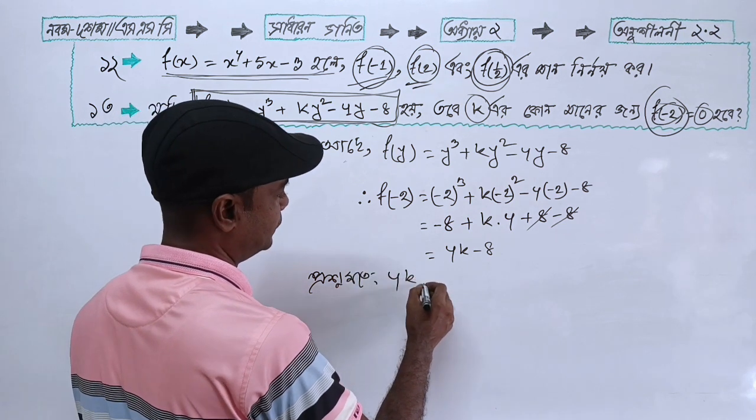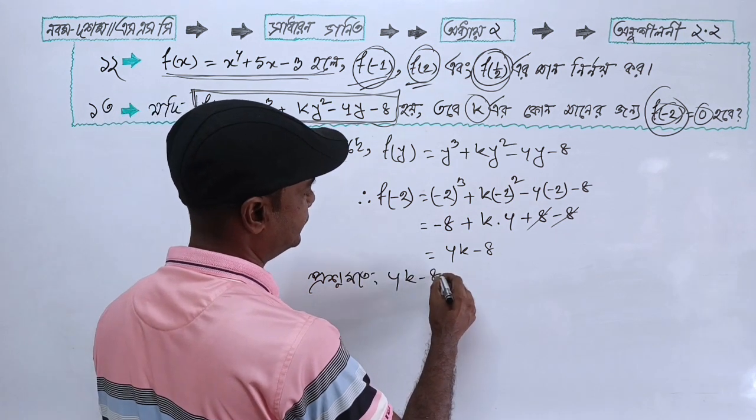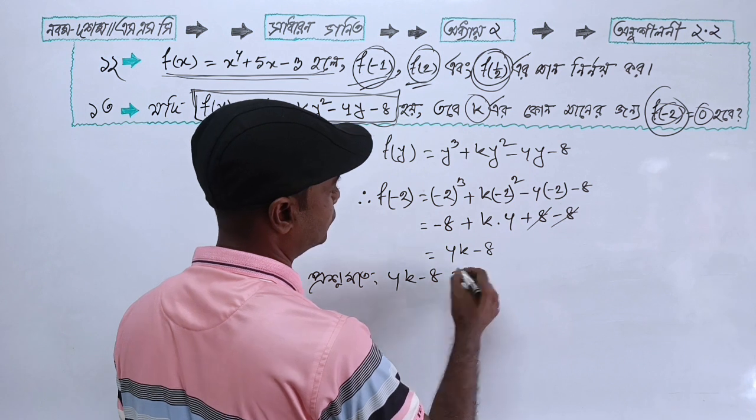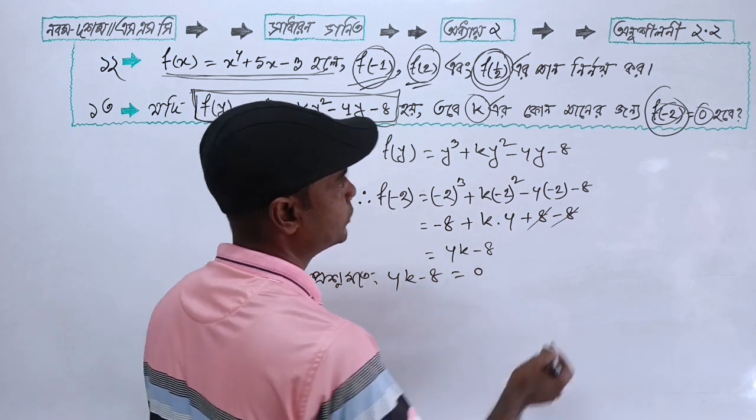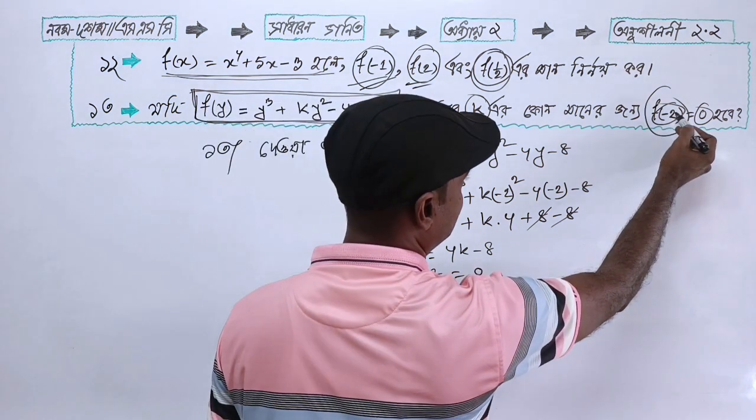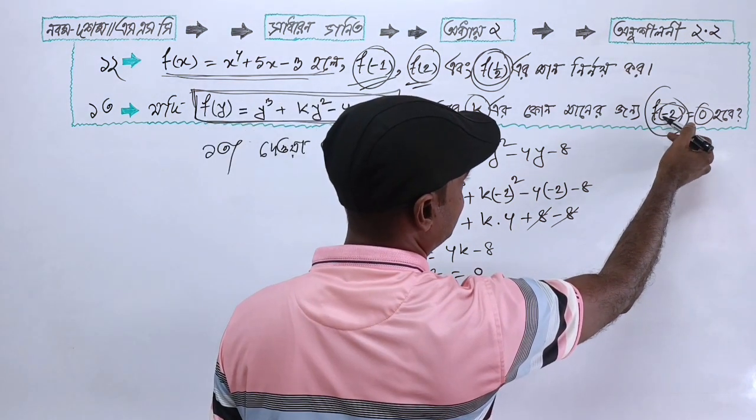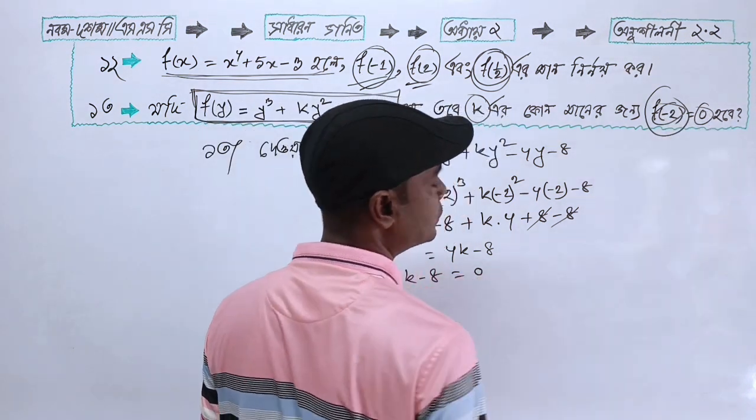We arrive at 4k minus 8 equals 0, so 4k equals 8, therefore k equals 2.